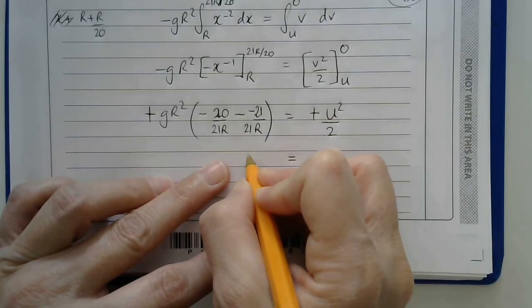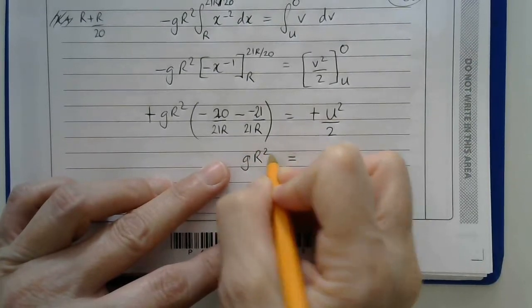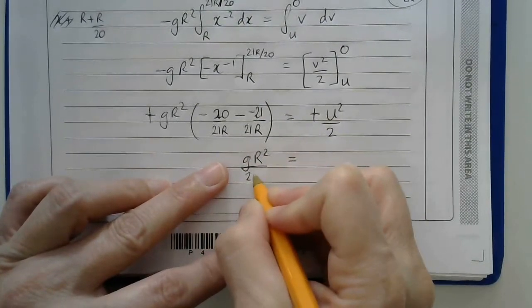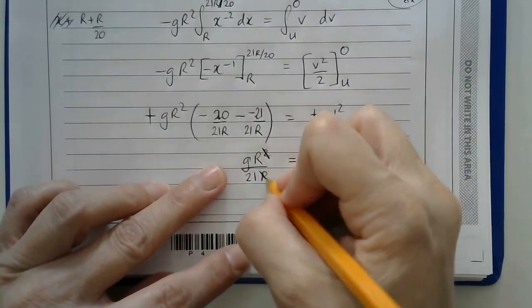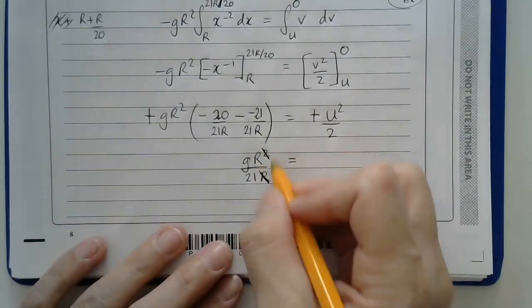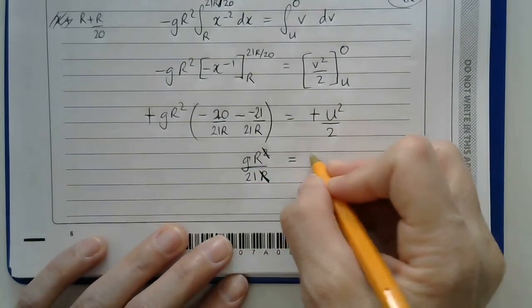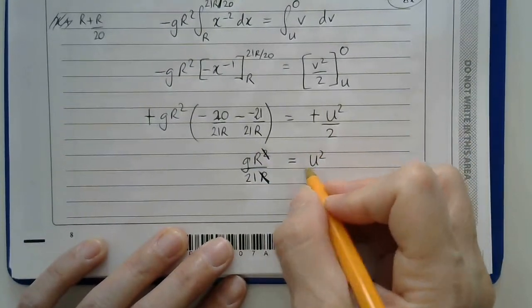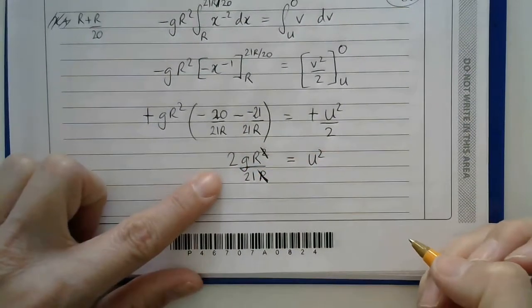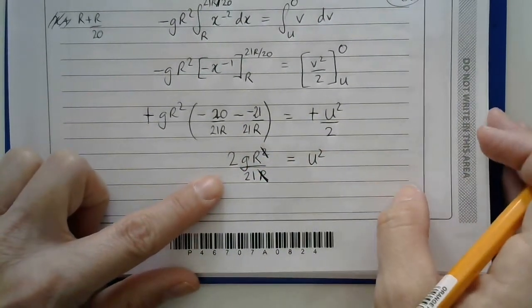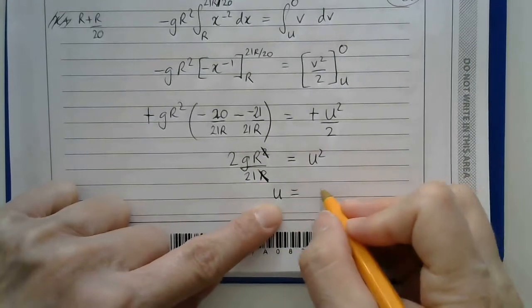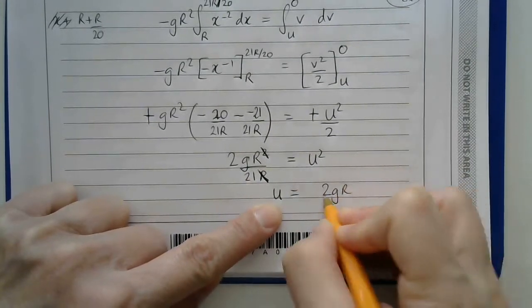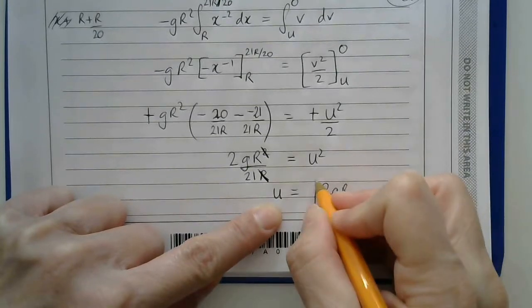So I end up with gr squared over 21r. I noticed that I could have cancelled an r here even, but if not, I'll just do it here. And here I've got u squared over 2, so I'll double both sides, and so the two ends up here. And they wanted u in terms of g and r, so final line, u will be 2gr over 21 square rooted.